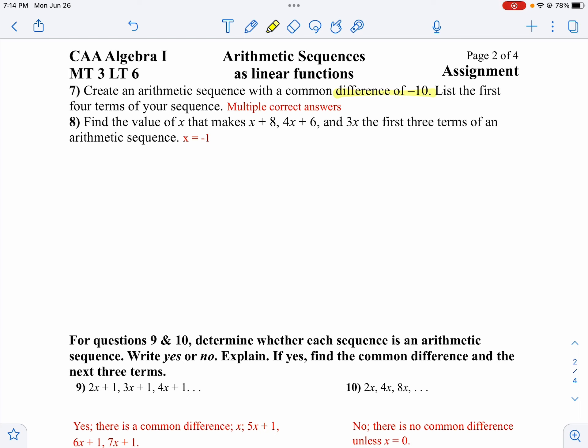On number 8, it seems kind of confusing, but if we just think about what a common difference is. So from x plus 8 to 4x plus 6, notice you're going from 8 to 6, we're going down by 2. And then we're going from x to 4x, so we're going up by 3x, so my common difference is 3x minus 2.